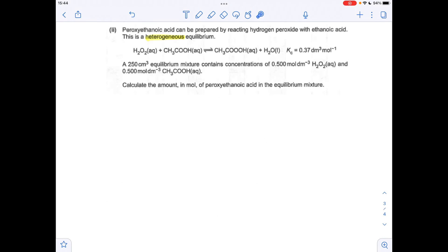For the final part of the question, we've got to calculate the amount in moles of the peroxyethanoic acid in the equilibrium mixture. We're going to need to write the Kc expression. You'll notice I've highlighted that it's a heterogeneous equilibrium. Because of that, we don't include the liquid. So we don't include the H₂O. Because its concentration is going to be huge compared to these.